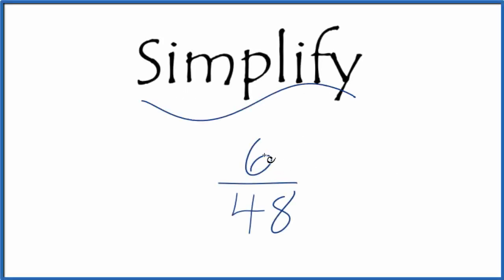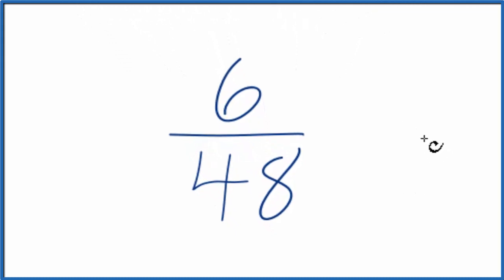Let's simplify the fraction six forty-eighths. We're trying to reduce or simplify six over forty-eight to lowest terms. So we need to find a common factor.